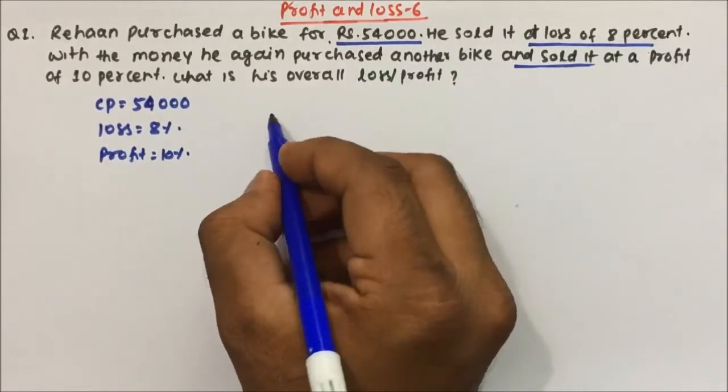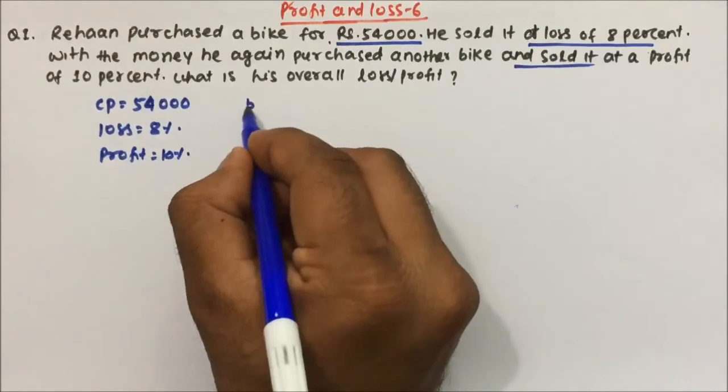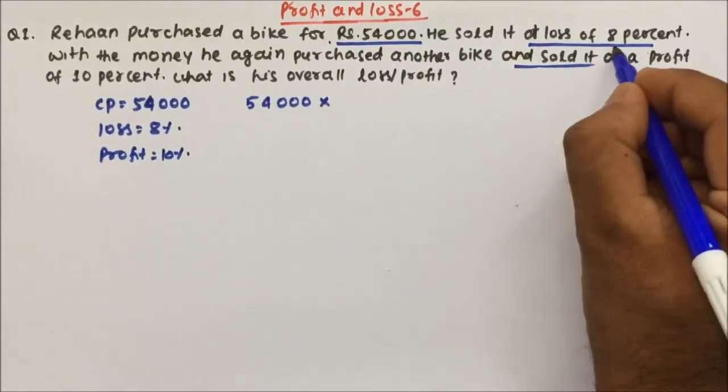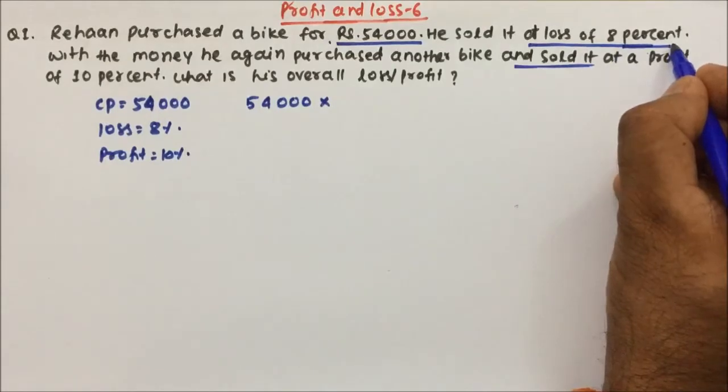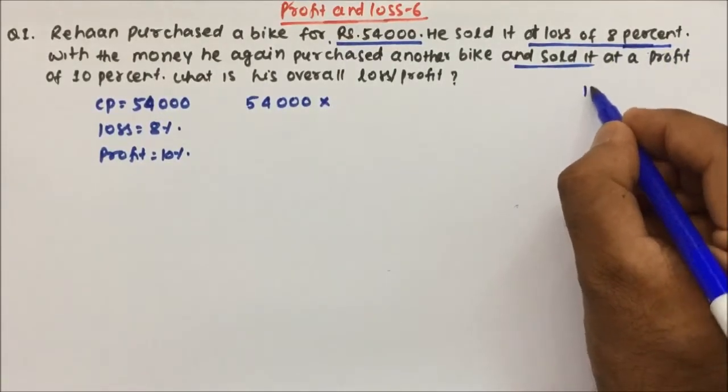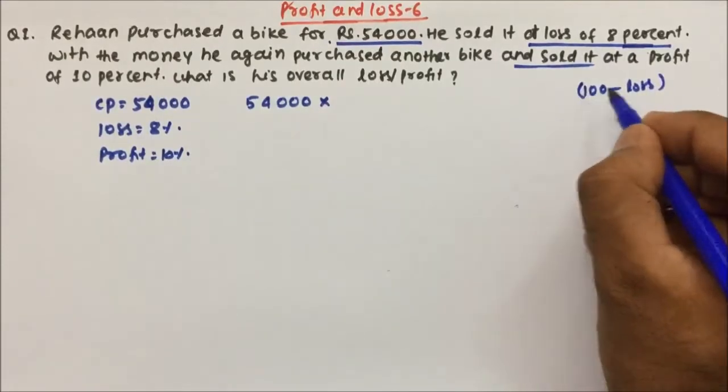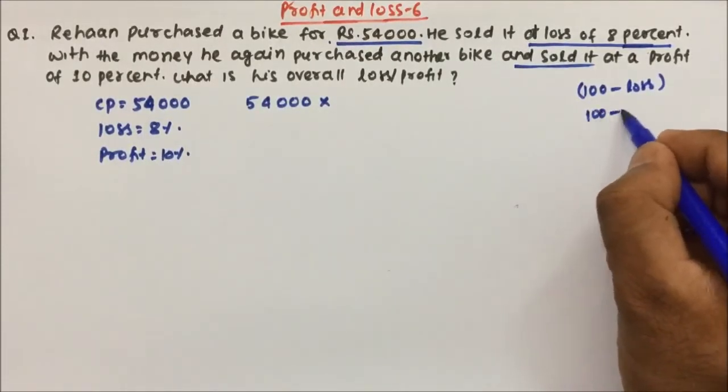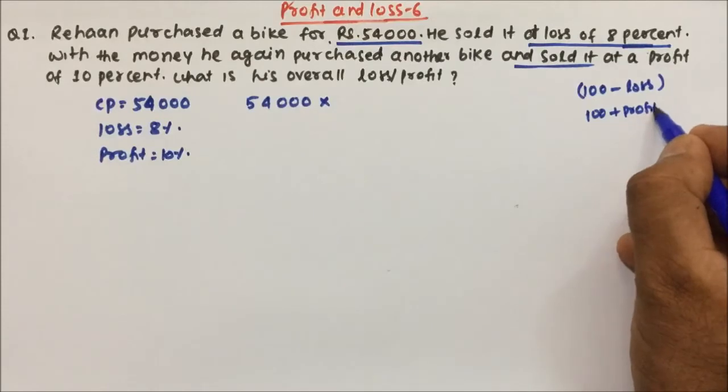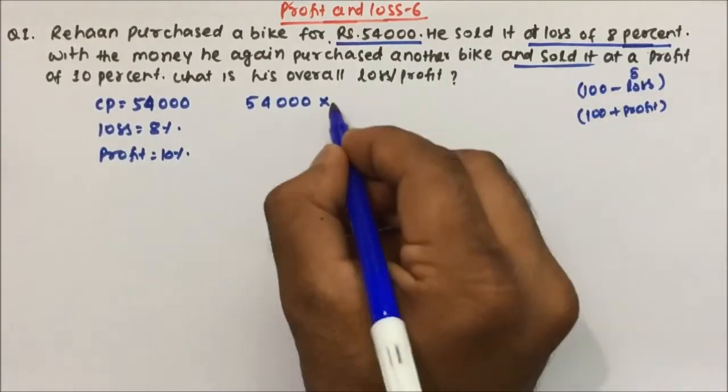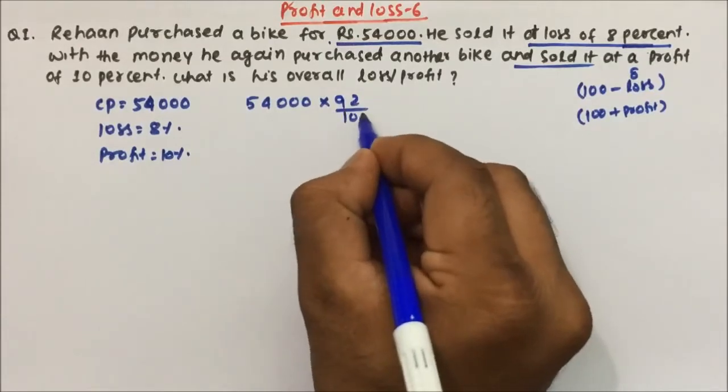So how do we solve it by percentage method? See, his cost price is 54,000. And then he is selling the bike at 8% loss. So if it is a loss, then we subtract it from 100. If it is a profit, then we add it to 100. So 8% loss, 100 minus 8 will be 92 by 100.